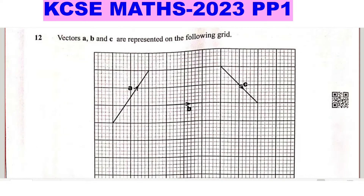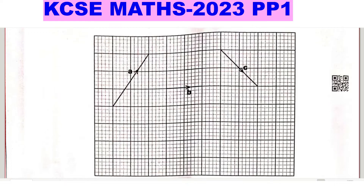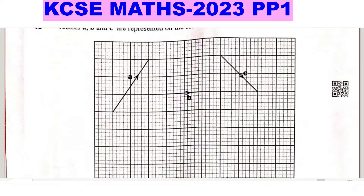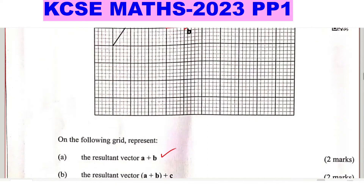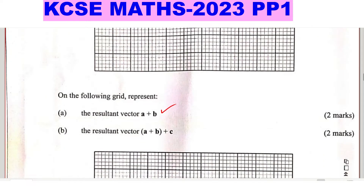Question 12. Vectors A, B, and C are represented on the following grid. Vector B is not clear enough, so let me draw it so you can see it. The questions on the grid ask you to represent the resultant vector A plus B, and then the resultant vector A plus B plus C.